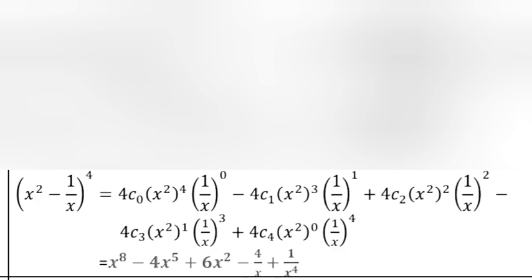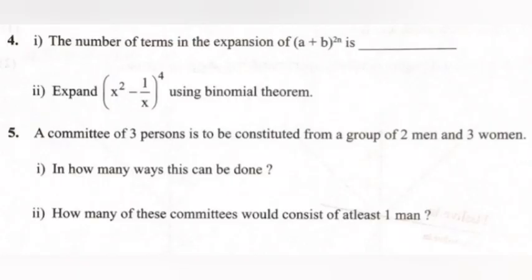minus 4C3(x²)^1(1/x)^3 + 4C4(x²)^0(1/x)^4 = x^8 - 4x^5 + 6x^2 - 4/x + 1/x^4.